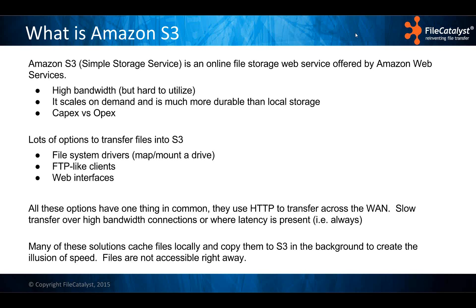So Amazon S3 — Simple Storage Service — is an online file store web service from Amazon. It has some benefits: high bandwidth access from anywhere, scales on demand so you don't need to worry about scaling out your NAS or SAN solution, it's more durable and highly redundant, and it's an operational expense rather than a capital expense — you're paying on the fly rather than paying for something up front that depreciates over time. There are lots of ways to transfer files into S3 currently: file system drivers where you map a drive or mount it on a Unix-based system, FTP-like clients such as CloudBerry, and different web interfaces. They all have one thing in common — they're all using HTTP to transfer files across the WAN, and therefore they're slow because of the latency, just like any other TCP-based transfers.